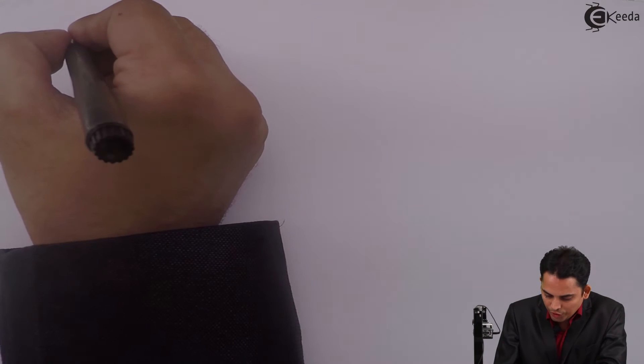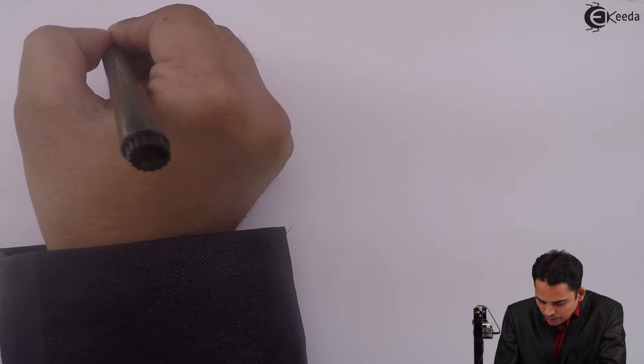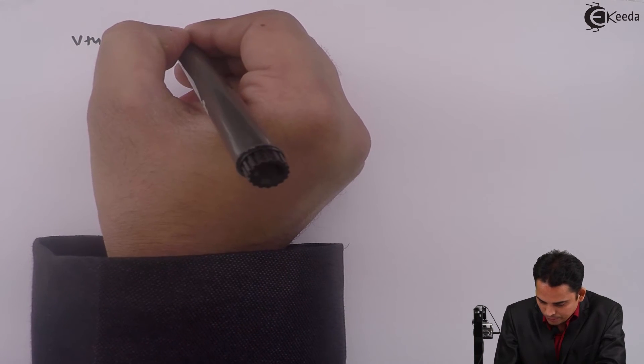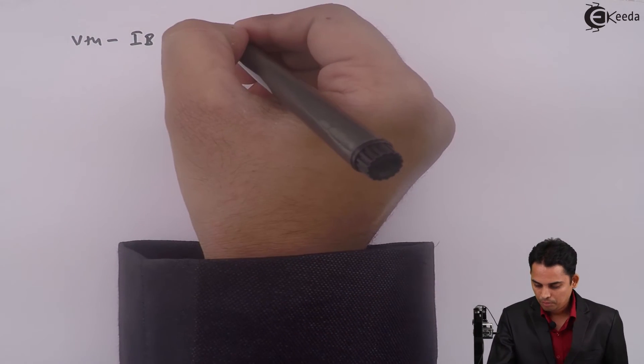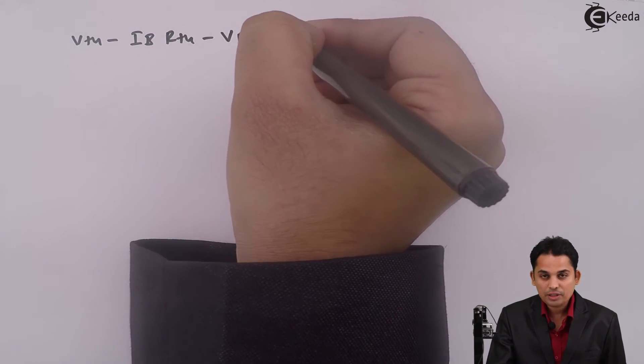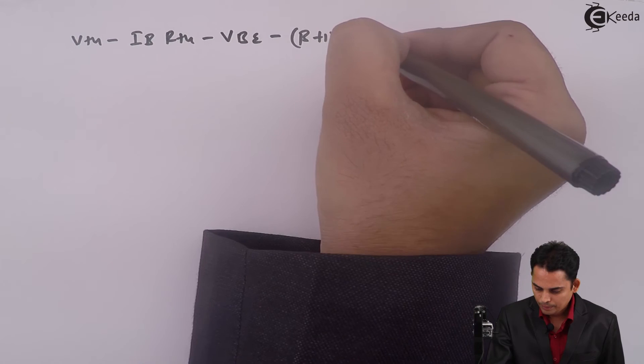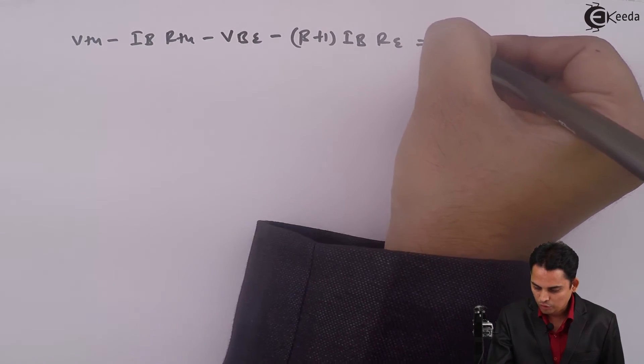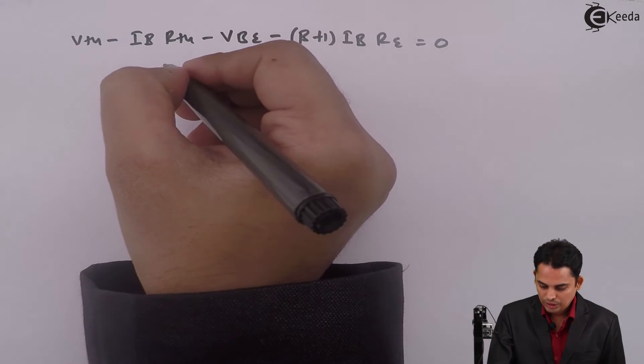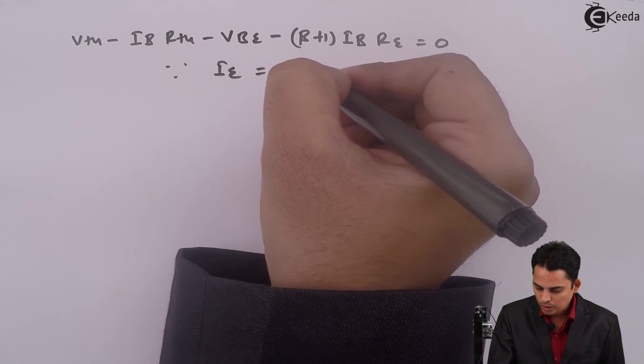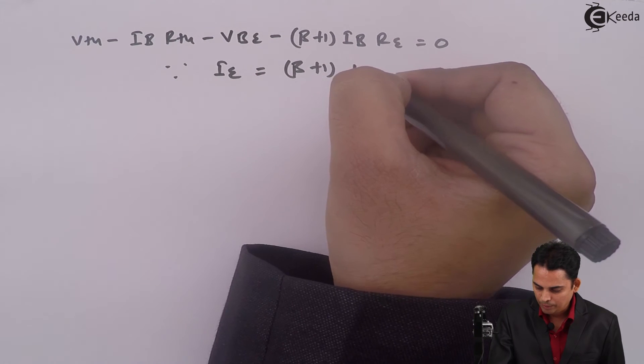If we apply KVL to the input, then the equation will become: Vth minus IB into Rth minus Vbe minus (beta plus 1) times IB into RE equals zero, since emitter current IE is equal to (beta plus 1) times IB.